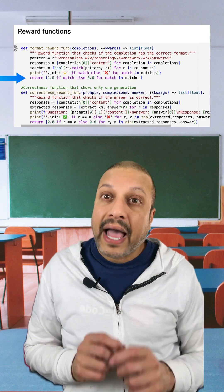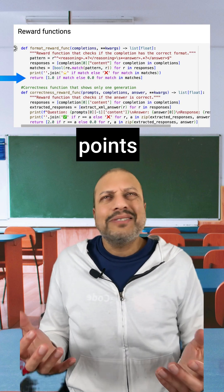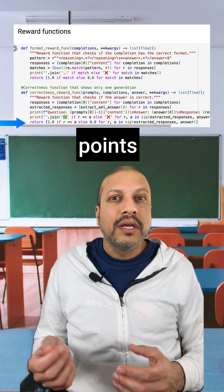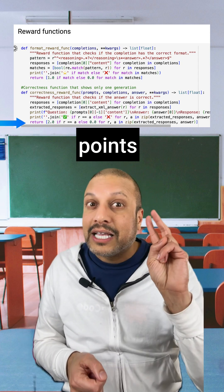The second reward is an accuracy reward. And since this is math, it's easy to tell if the answer is right or wrong. The model gets it right, it gets two points.